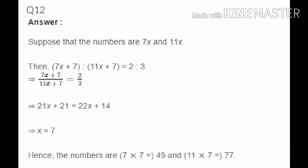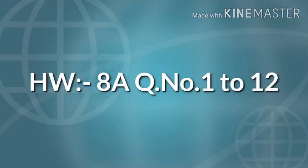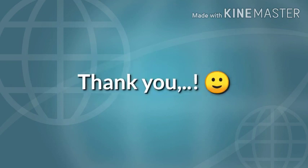Question 12: Two numbers are in the ratio 7:11. Let the numbers be 7x and 11x. If 7 is added to each, the new ratio is 2:3. Setting up (7x + 7):(11x + 7) = 2:3 and cross-multiplying gives x = 7. So the numbers are 7 × 7 = 49 and 11 × 7 = 77. Homework: complete up to Question 12 of Exercise 8A.